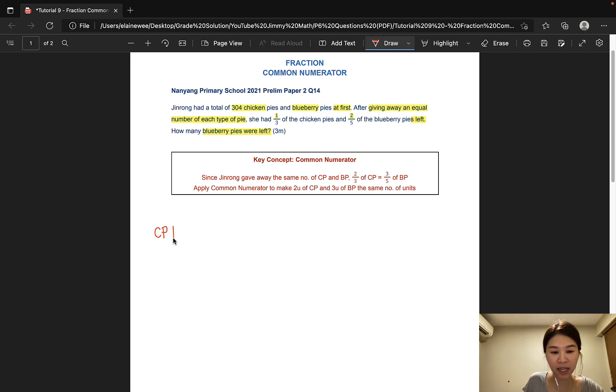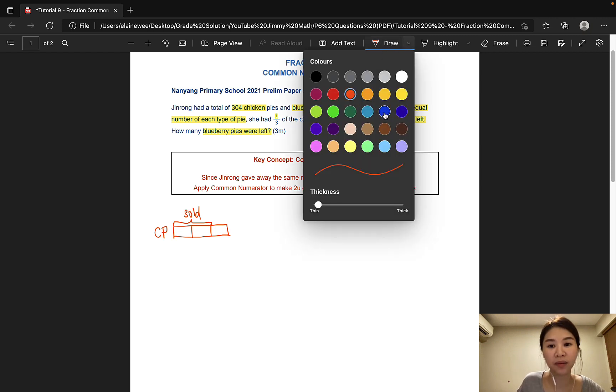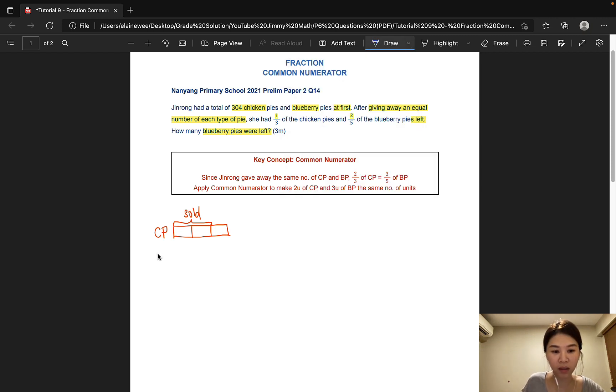So as discussed, two third of the chicken pies was sold, and these two units is actually the same as three units of the blueberry pies sold.